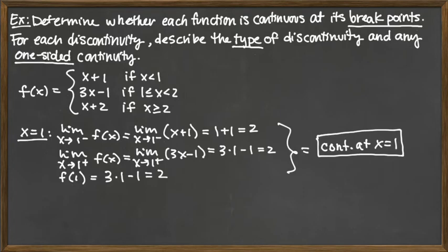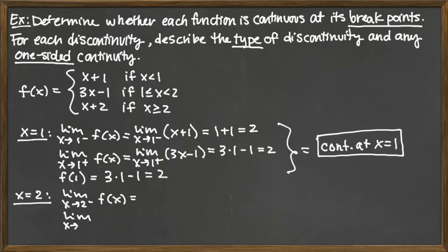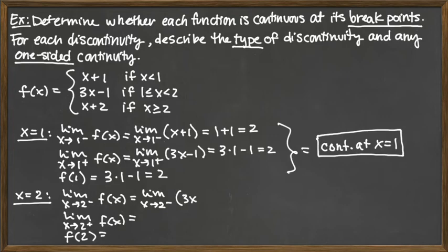The other breakpoint is at x equals 2. We repeat the same process: left-hand limit, right-hand limit, and function value at 2. For the left-hand limit, values slightly less than 2 fall in the middle piece, so we compute the limit as x approaches 2 from the left of 3x minus 1. Plugging in gives 3 times 2 minus 1, which equals 5.